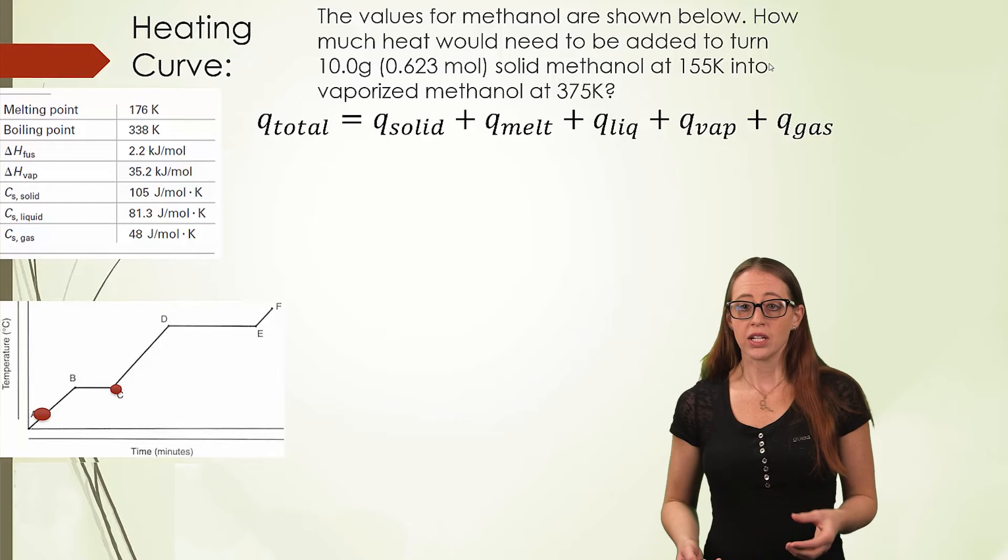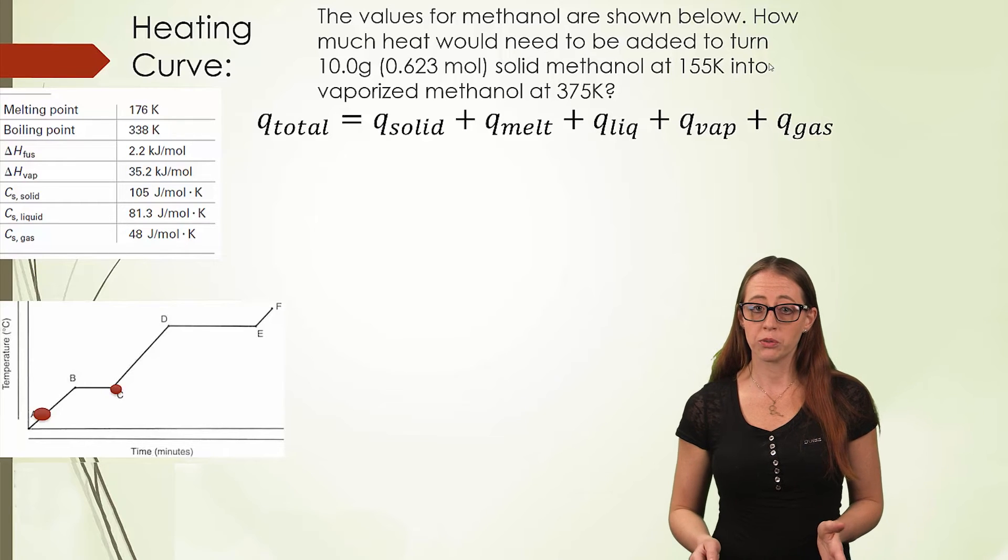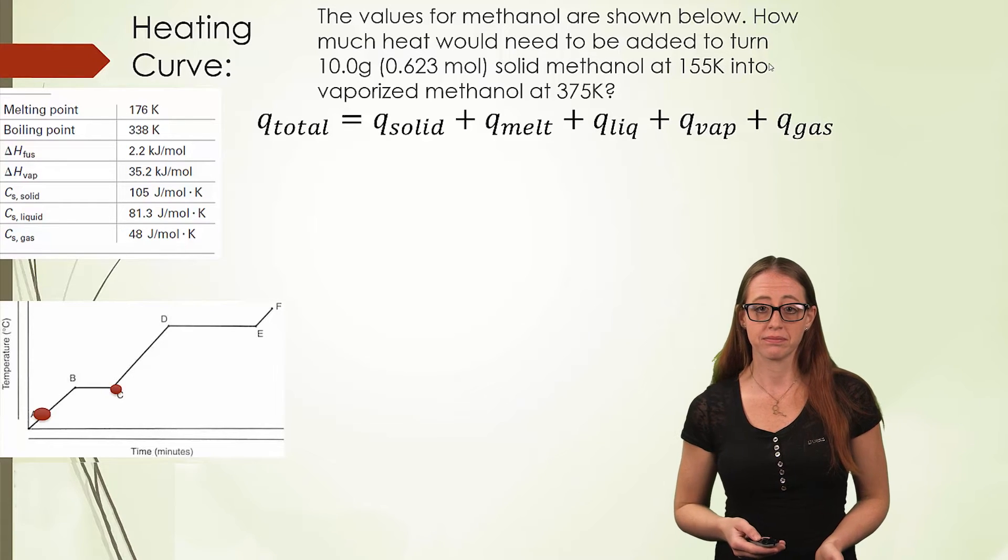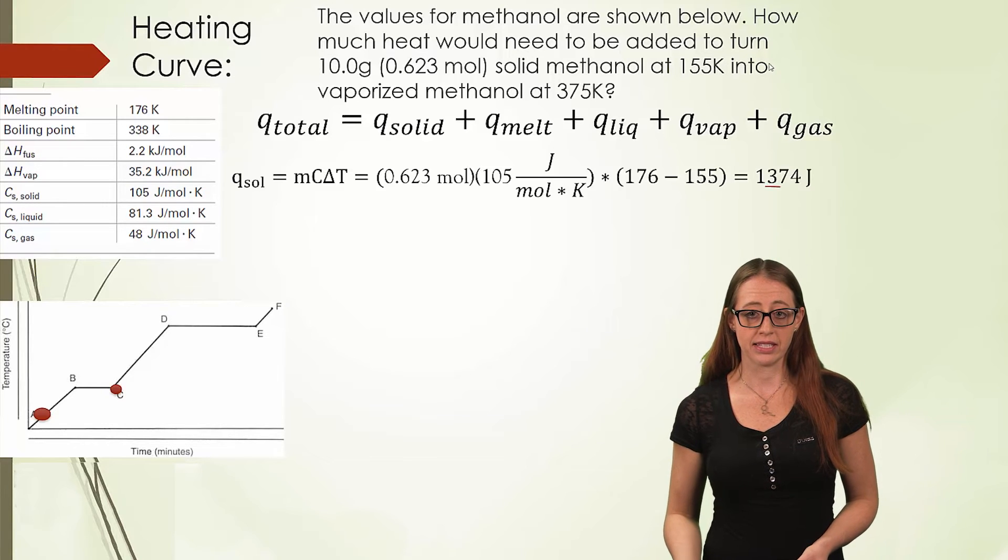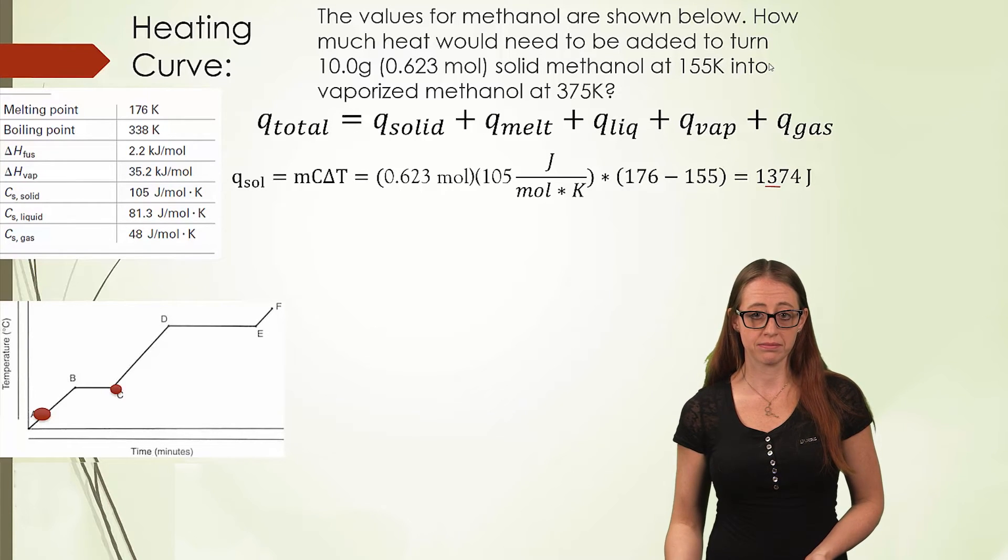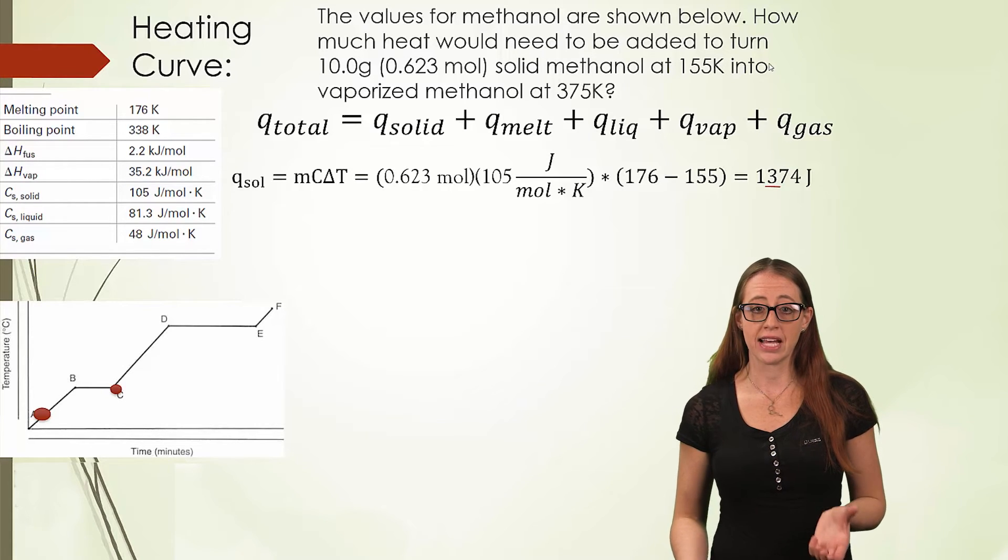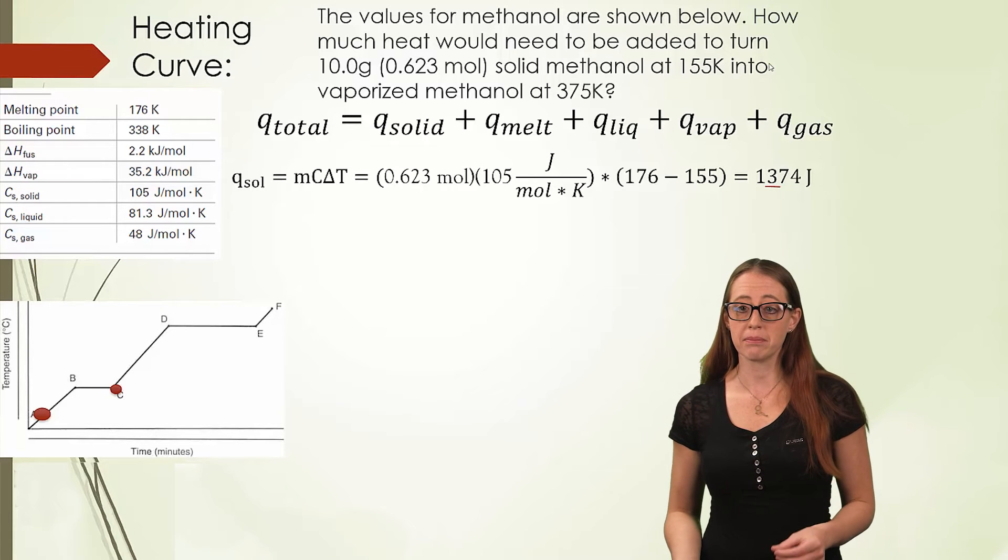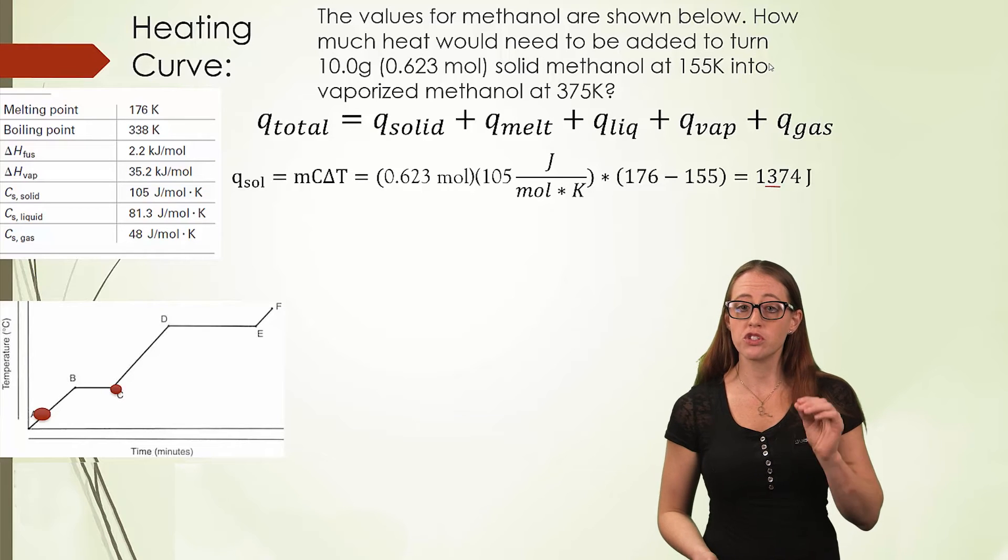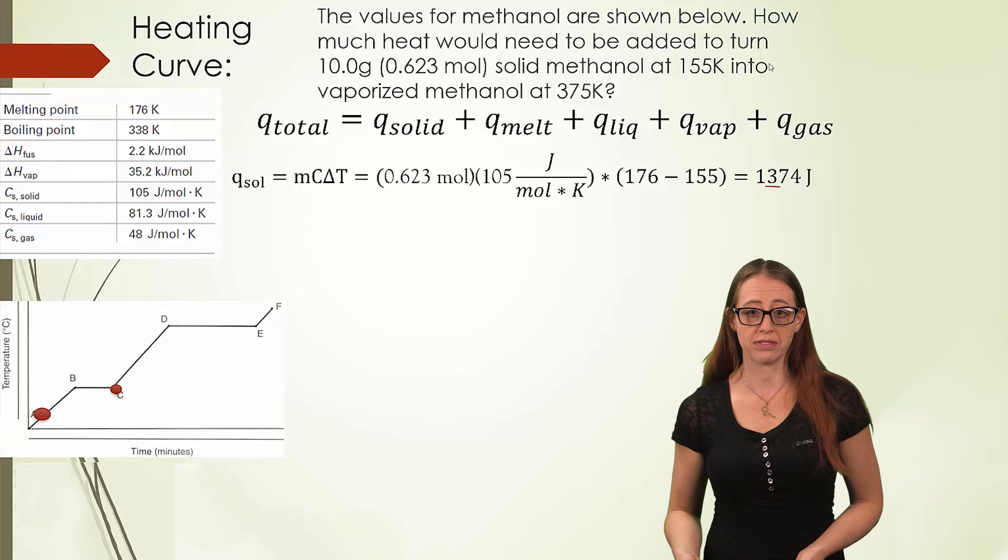We will start with the first two parts. We will heat the solid methanol to its boiling point, eventually. But for right now, we are just going to be heating the solid up to its melting point. Filling into Q equals MCT will give us the 0.623 moles, multiplied by the 105 joules per mole Kelvin, multiplied by the delta T. Something that people tend to mistake here is how to calculate the delta T. Remember, this isn't the full change over the entire problem. It's just the change from the solid at the initial temperature to its melting point. So we get the 176 minus 155, leaving us with a final answer of 1374.